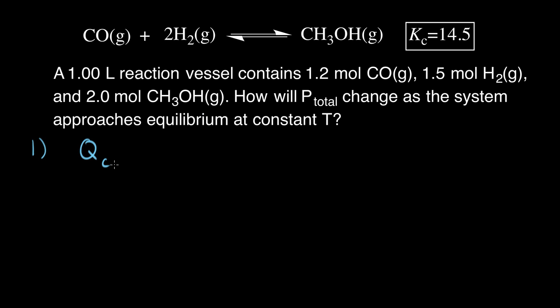So for this reaction, our reaction quotient Q is the product concentration CH3OH, or methanol, divided by the concentration of our hydrogen gas to the second power, because of that stoichiometric coefficient. And then also in the denominator, we have our carbon monoxide concentration.